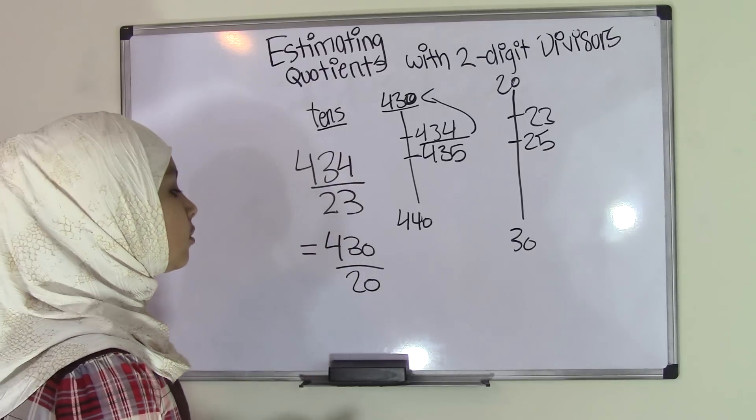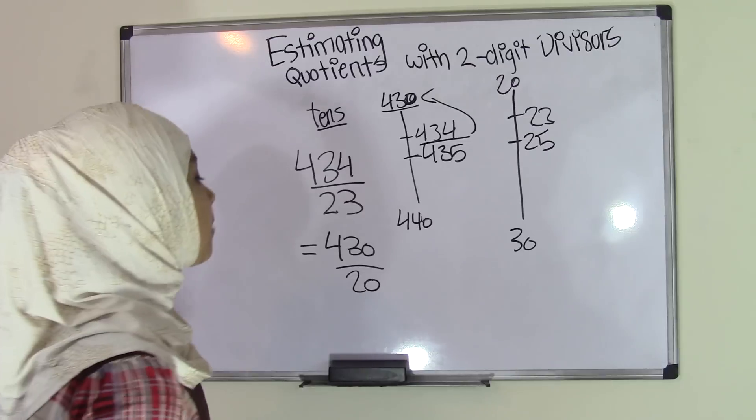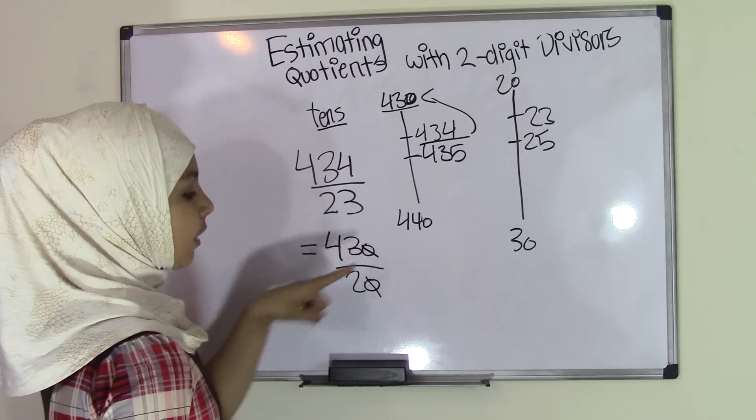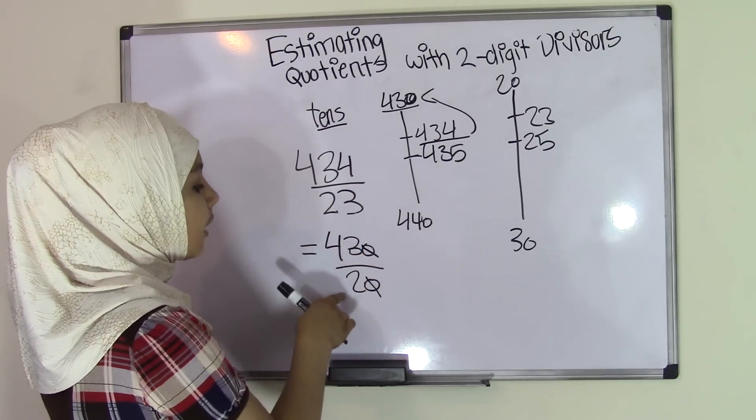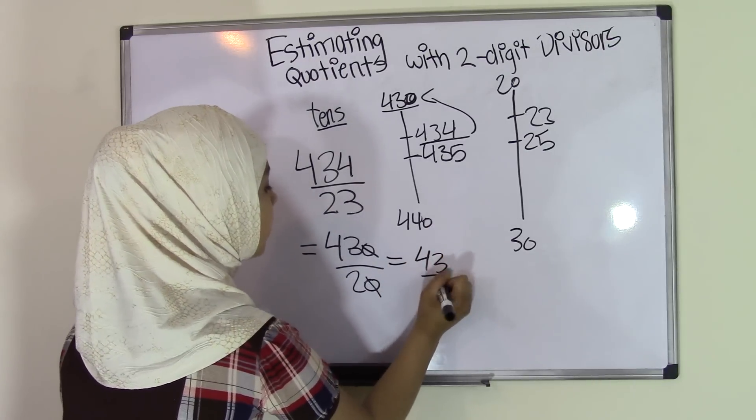Rather than using all these big numbers, all we can do is simply cut the zeros off one by one. Now we have 43 and 2 left. That means it'll become 43 divided by 2.